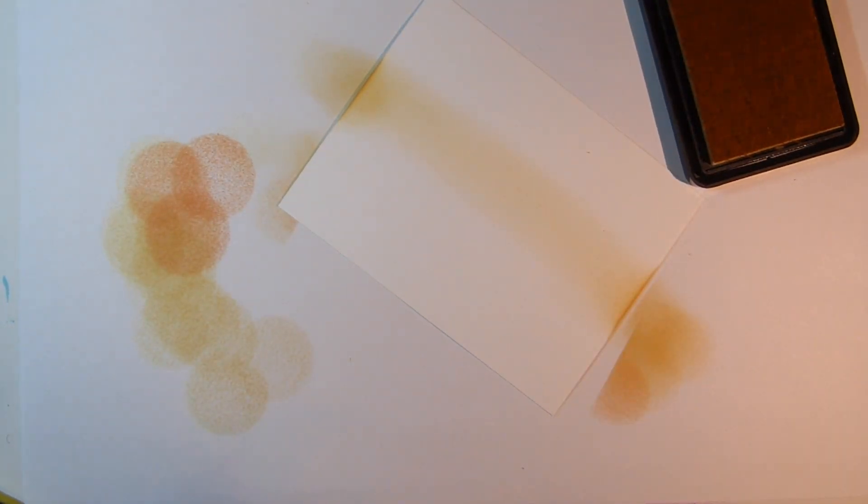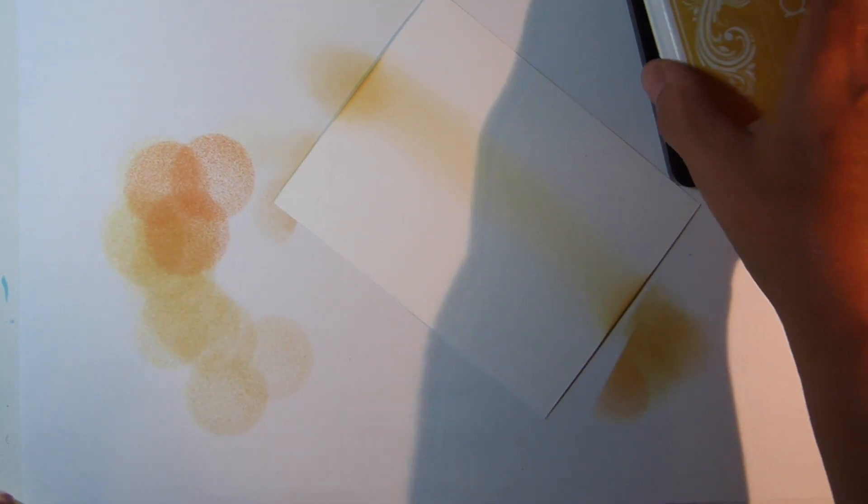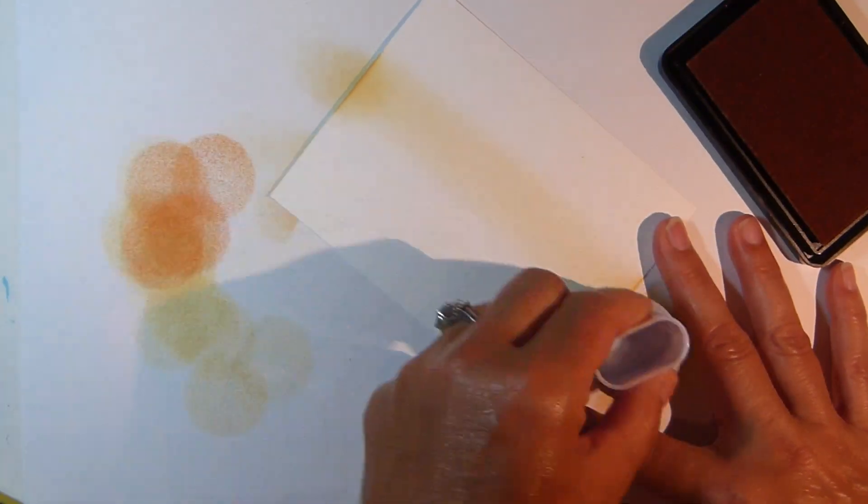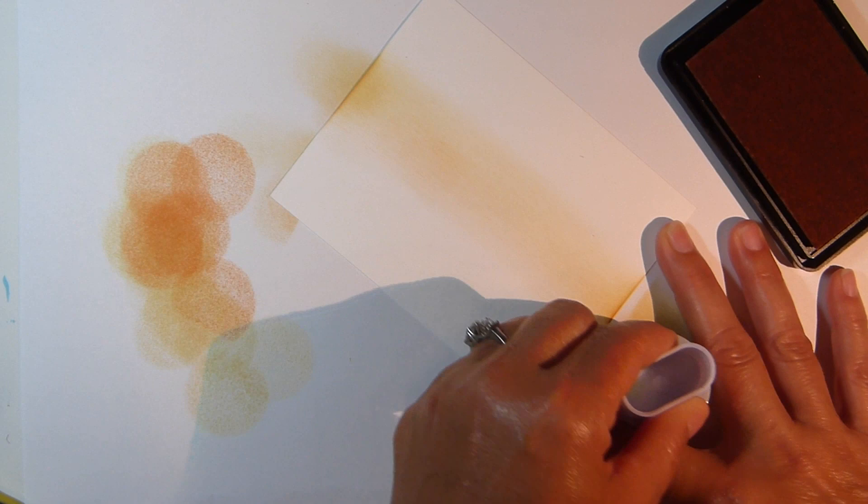As you're swiping, you want to use a very light touch. You don't want to be pressing down hard at all. Switch to Sweet Mango ink and once again swipe back and forth, this time working below and above the yellow.